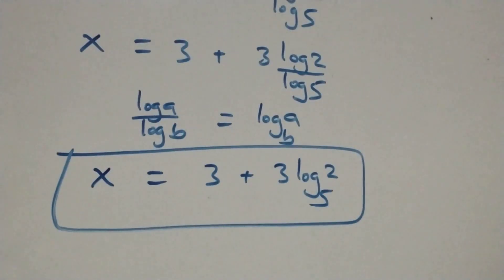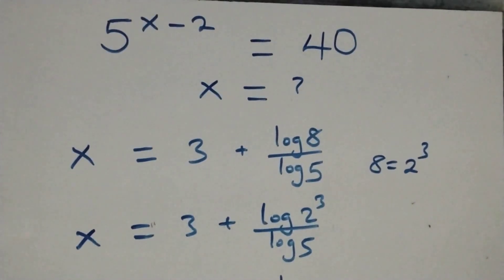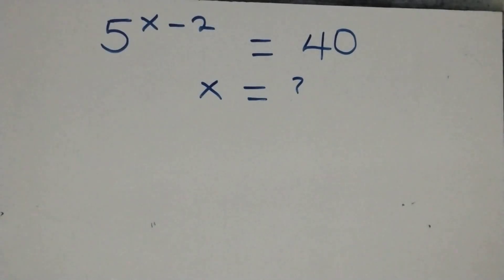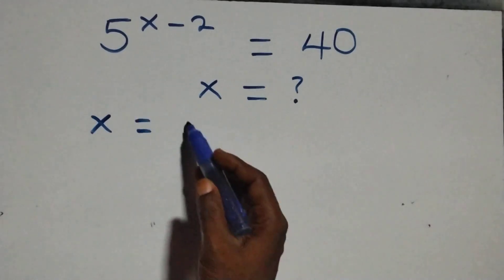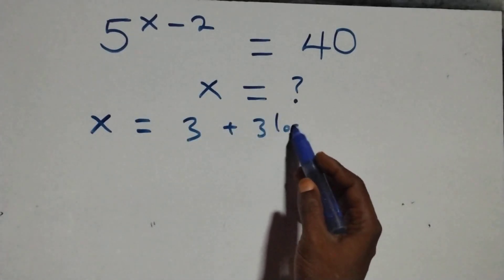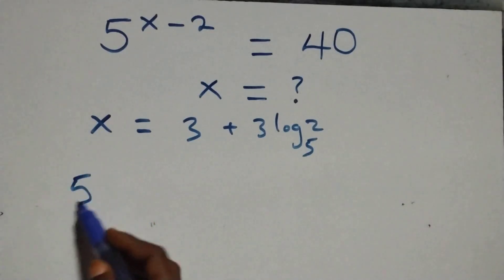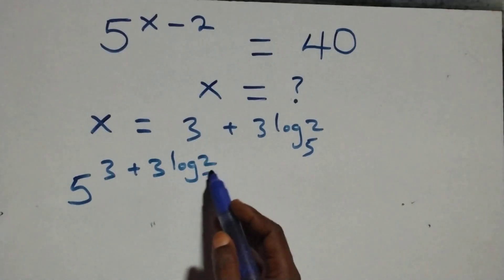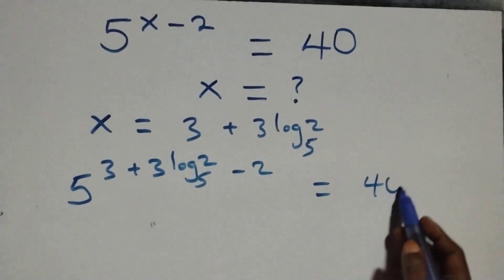Let's verify that this satisfies the original equation. We substitute x equals three plus three log two base five into the equation, giving us five raised to power three plus three log two base five minus two equals forty. Simplifying three minus two, the exponent becomes one plus three log two base five.